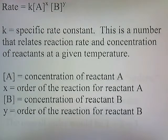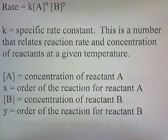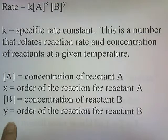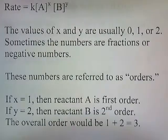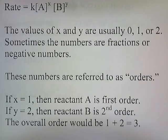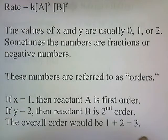K is something called the specific rate constant — a number that relates reaction rate and concentration of reactants at a given temperature. [A] is the concentration of reactant A, and X is the order of the reaction for reactant A. [B] is the concentration of reactant B, and Y is the order of the reaction for reactant B. The values of X and Y are usually 0, 1, or 2, and sometimes fractions or negative numbers — these are referred to as orders. If X equals 1, reactant A is first order. If Y equals 2, reactant B is second order. The overall order for the rate law is the sum of X and Y: 1 plus 2 equals 3.